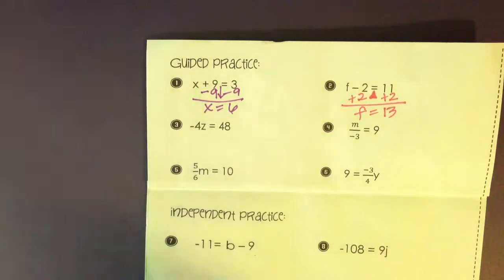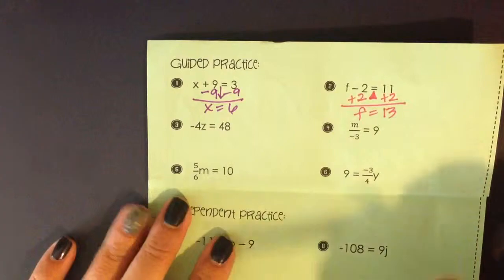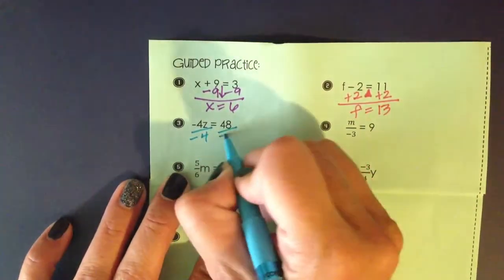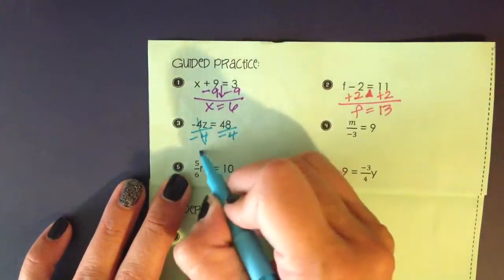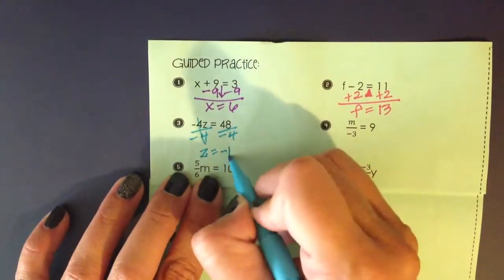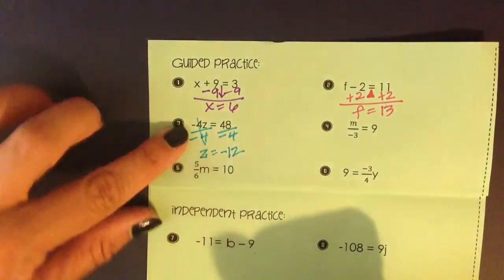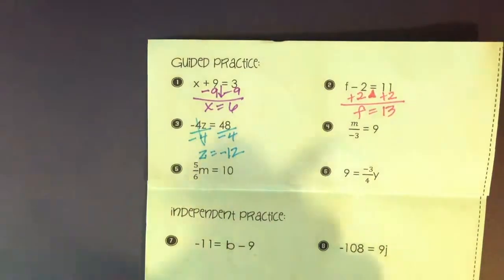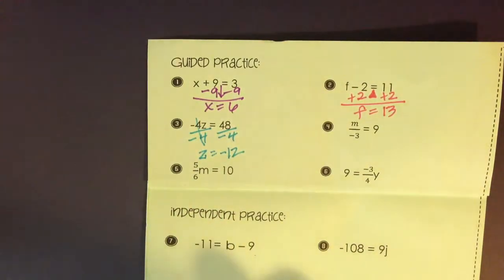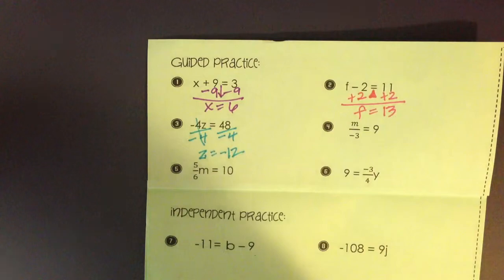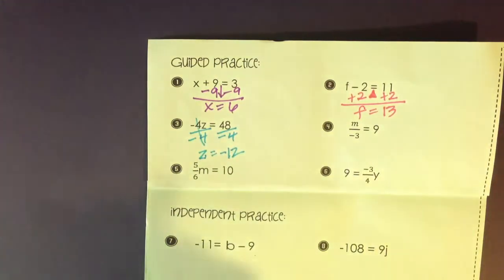Again, these are review skills, expected skills for you to come to advanced algebra with, yet I understand in the beginning of this school year we might need to refresh a little bit. Negative 4 times z, the coefficient on z was negative 4, and in order to undo multiplication I'm going to use division and show that with a fraction bar.